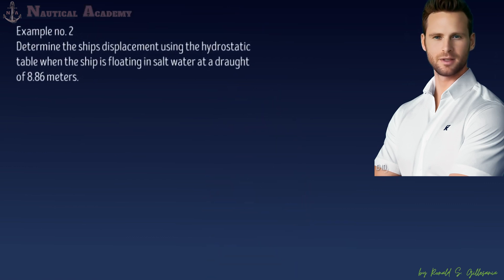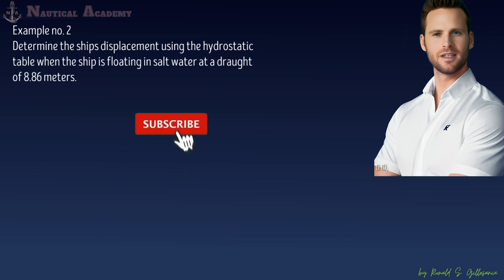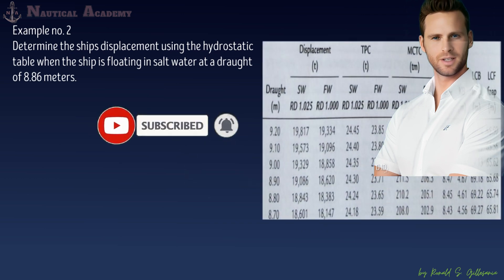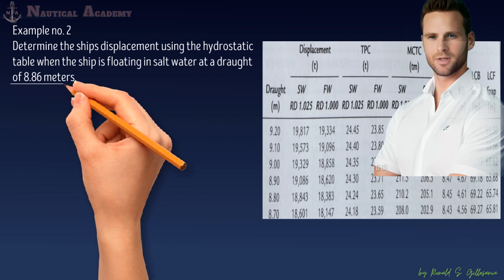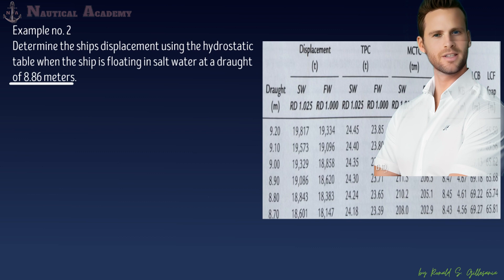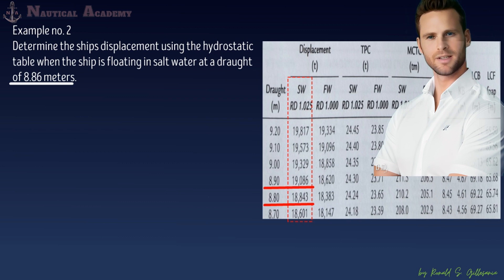This is my second example in finding the value of ship's displacement using a hydrostatic table. Determine the ship's displacement using the hydrostatic table when the ship is floating in salt water at a draft of 8.86 meters. The available displacement values in the table are at drafts of 8.80 meters and 8.90 meters, so we will need to interpolate to find the displacement at 8.86 meters.